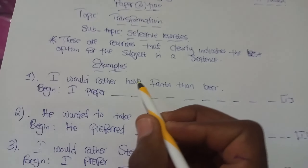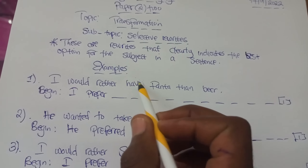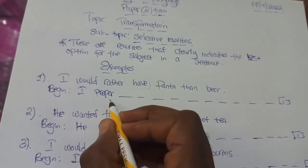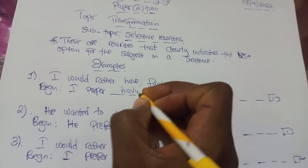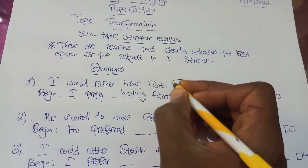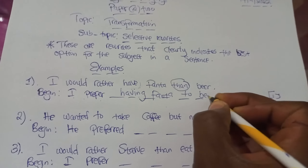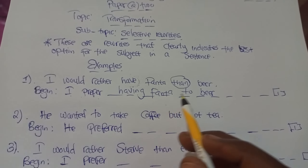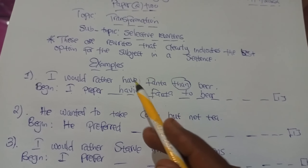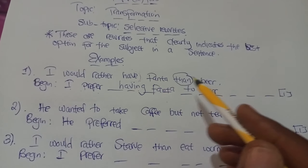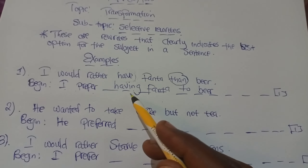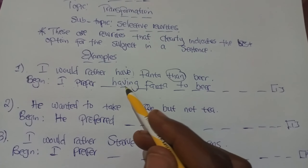If we say 'I prefer Fanta to beer,' it's wrong in this context because the person is assumed to be choosing — so it should be in the gerund form. We say 'I prefer having.' Having what? 'I prefer having Fanta,' then we change 'than' to 'to,' giving us 'I prefer having Fanta to beer.' Saying 'I prefer Fanta to beer' is wrong because the option implies this is not actually happening. It's very important to change the verb into its gerund form.